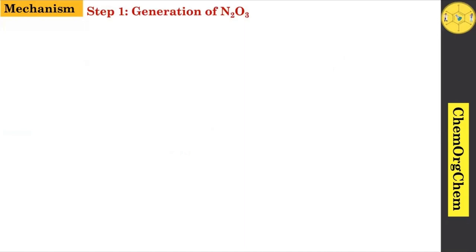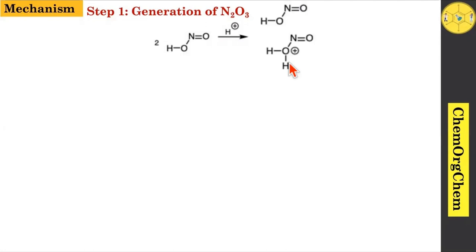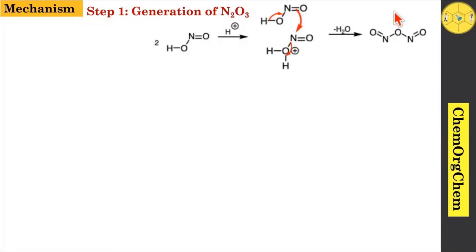The first step is generation of N2O3. Here you see two nitrous acid molecules in the presence of acid which react together to produce corresponding N2O3. Initially this electron shifts here, then followed by this electron attacking this nitrogen center, followed by kick-off of this water molecule, which leads to generate this corresponding reactive intermediate. The next step is amine to diazonium salt formation.